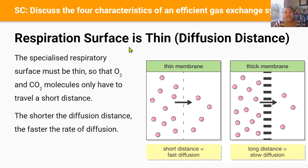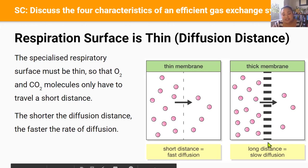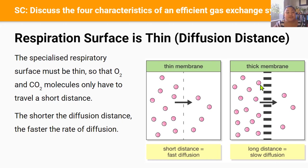The third characteristic of an efficient gas exchange system is that the surface has to be thin. The rate that oxygen and carbon dioxide can diffuse across a respiratory surface depends on how far the molecules have to travel, so the specialized respiratory surface has to be as thin as possible to make the diffusion distance as short as possible. A short diffusion distance means molecules can diffuse faster, whereas thick membranes or long diffusion distances result in molecules traveling more slowly. Diffusion is a form of passive transport — it's relatively slow, and it's made even slower if the distance a molecule has to travel is very far.